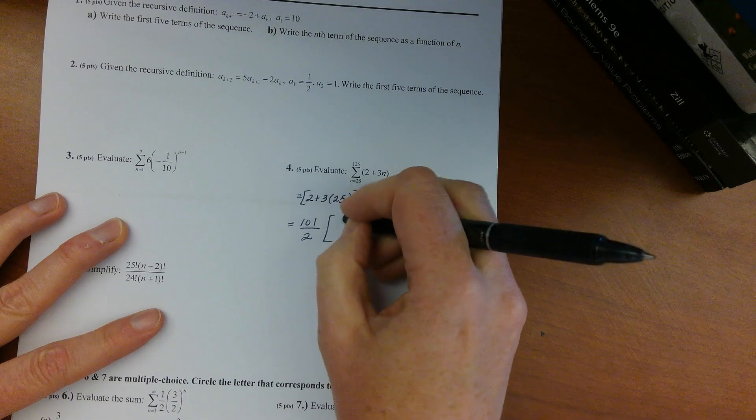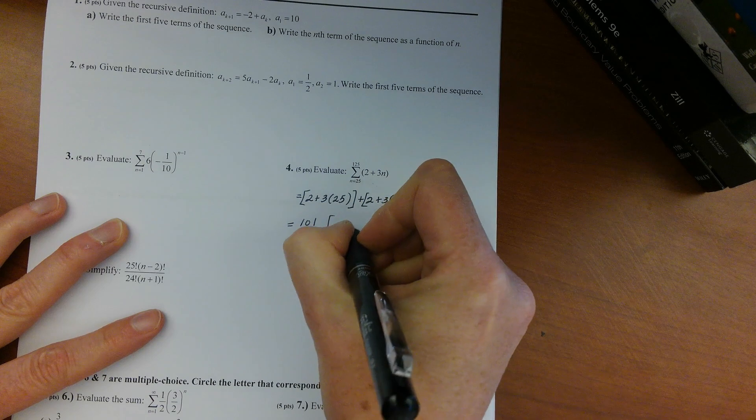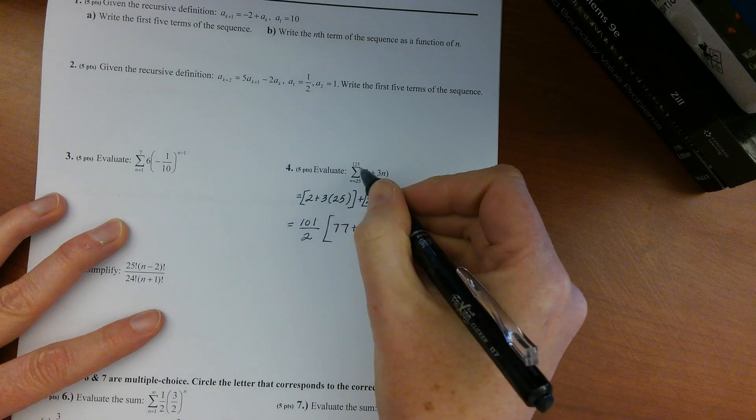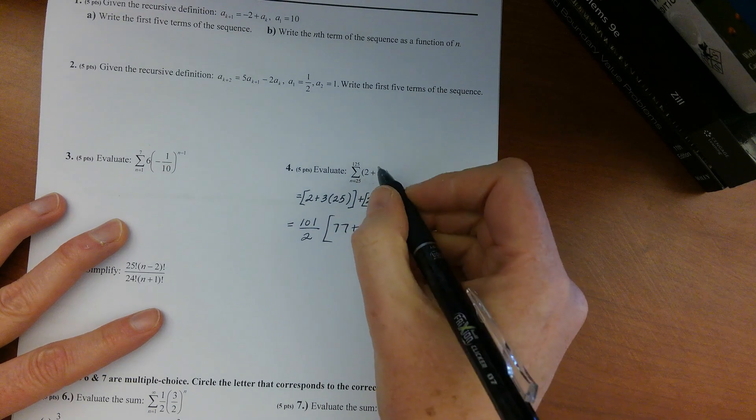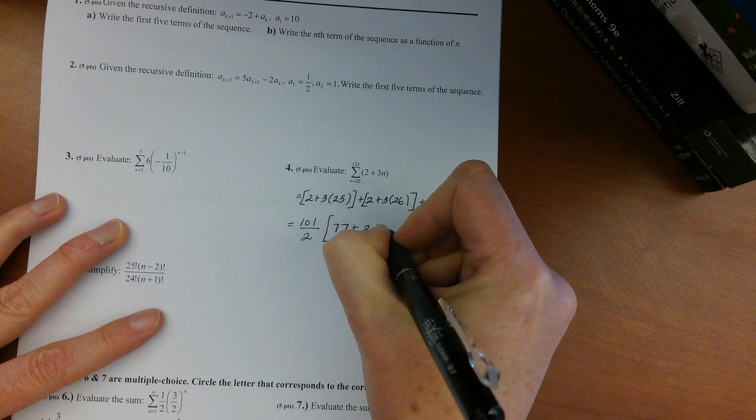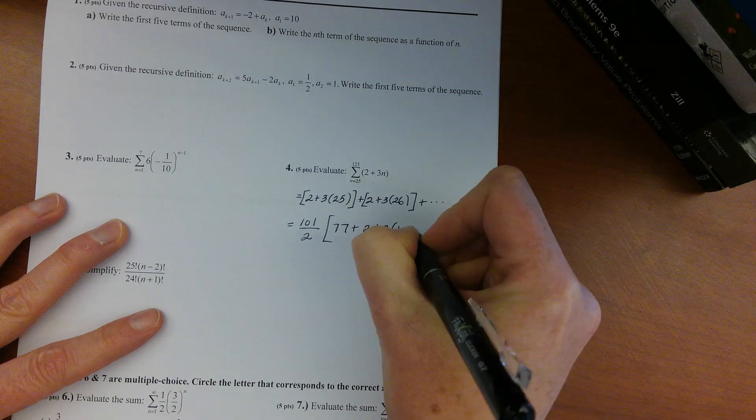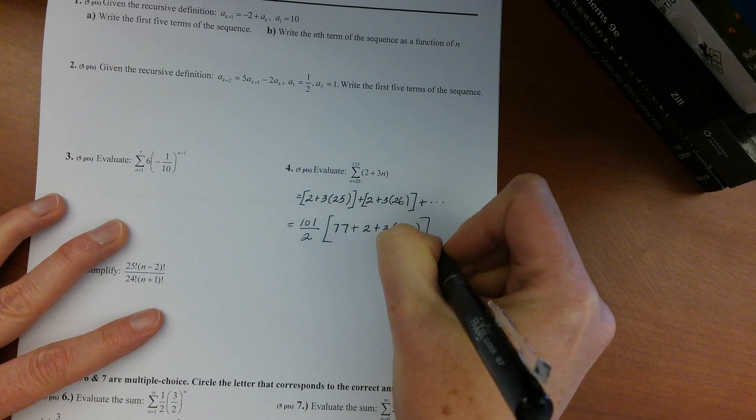Plus the value of your last term in the list, which would be the 125th term, and so that would be whatever 2 plus 3 times 125 is. I guess go ahead and take another step to simplify that.